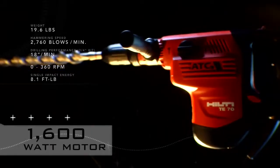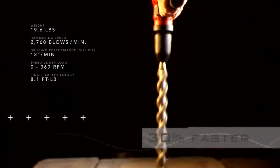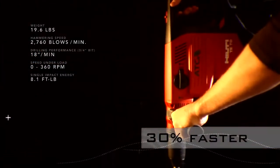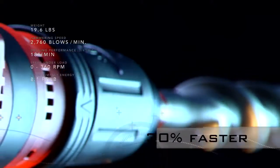With its 1600 watt motor, the TE70ATC is 20% stronger and 30% faster than the competition. Now that's a tool to have on your team.